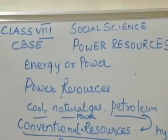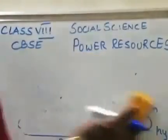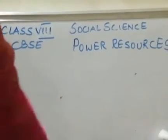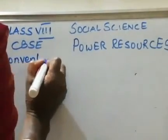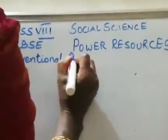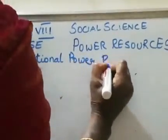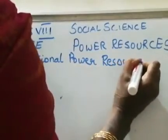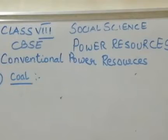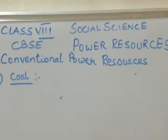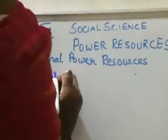Today let us take up the first conventional power resource: coal. Coal is obtained from decayed plants which got buried under sediments thousands of years ago, and it is also known as fossil fuel.